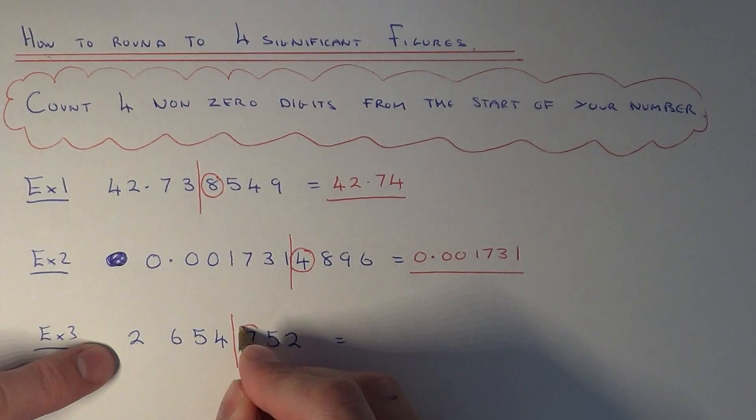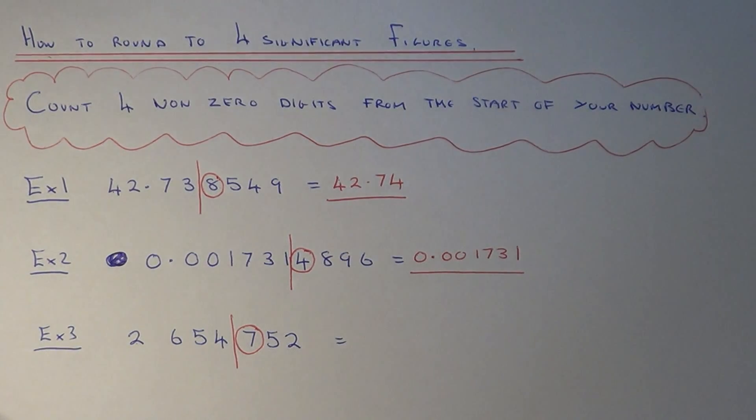We need to look at the number after the line to decide which one it's closest to. Since that number is five or above, we need to round it upwards. So our answer will be closer to 2,655,000.